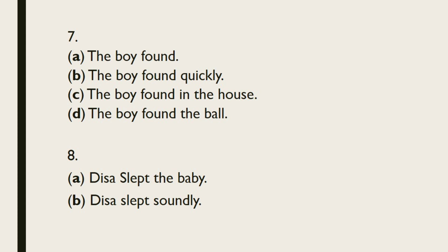Syntactic rules also specify other constraints that sentences must adhere to. Look at the statements in item number 7 — can you identify which one is ungrammatical? It is more likely that you will find sentence 7D grammatical and the ones in 7A to C are ungrammatical. Why? Because the syntax rules specify that a verb like 'found' must be followed by something, and that something cannot be an expression like 'quickly' or 'in the house,' but must be like 'the ball.' So: 'The boy found the ball.' Similarly, you might find sentence 8B grammatical while sentence 8A is not.